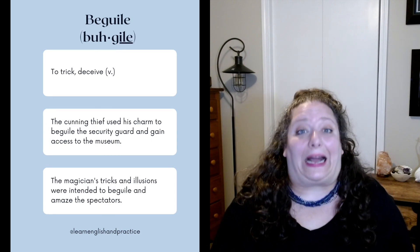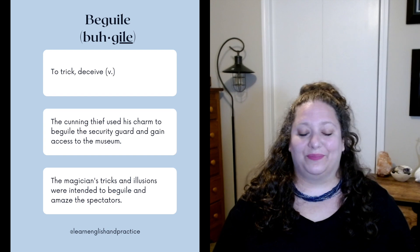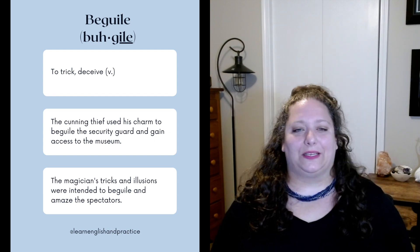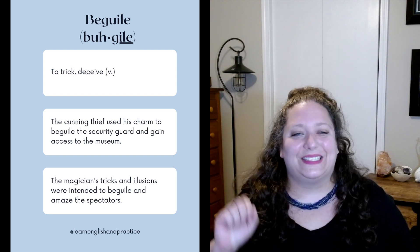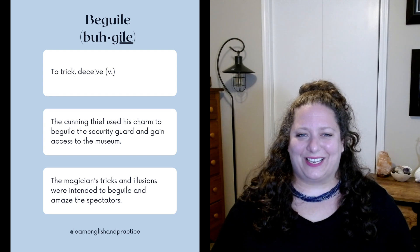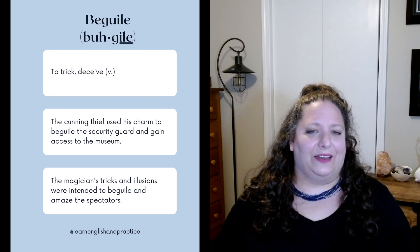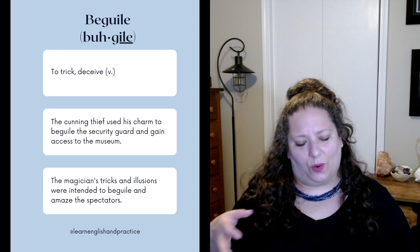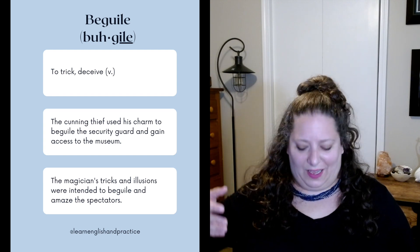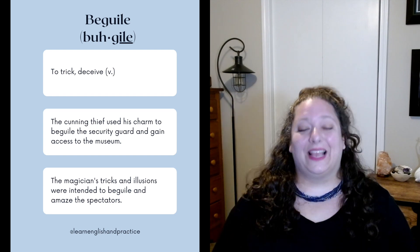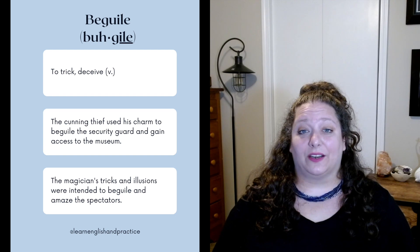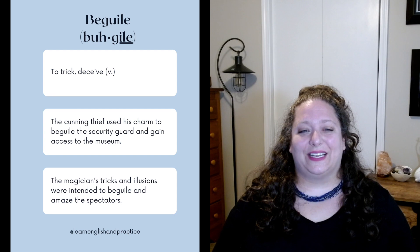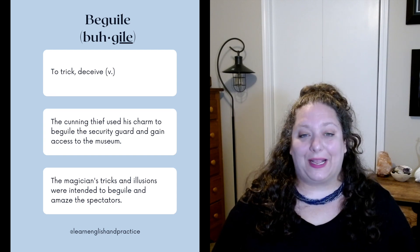First, we have beguile. This means to trick or deceive. It's a verb. To beguile means to convince someone of something that isn't quite true. Usually it has a connotation of using your charms or your wit to accomplish some sort of agenda. Examples: the cunning thief used his charm to beguile the security guard and gain access to the museum. The magician's tricks and illusions were intended to beguile and amaze the spectators.